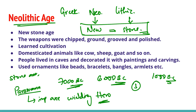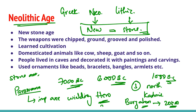The first area is found in the north, in the valley of Kashmir, at a place called Burzahom, at a distance of about 20 km from Srinagar. The Neolithic people lived there in pit dwellings. The weapons used by these people were chipped, ground, and polished, and had different forms to serve different purposes. During this period, man learned cultivation and domesticated animals like cow, sheep, goat, and so on.